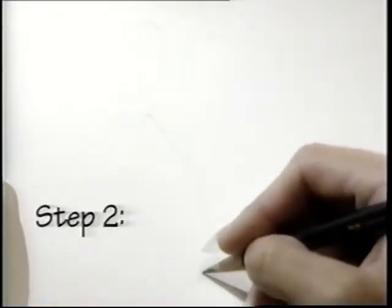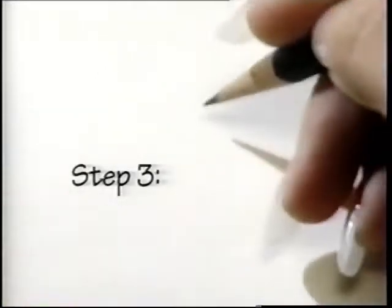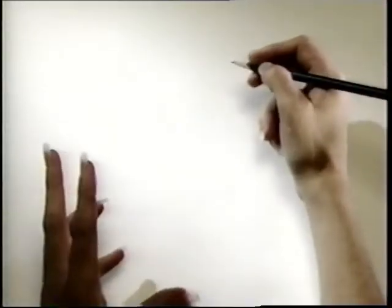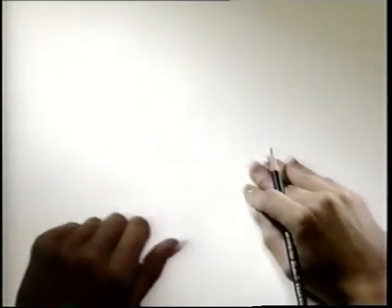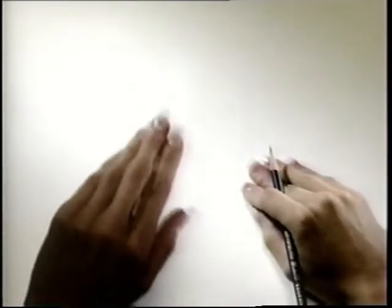Now, step number two can be drawn right on top of step number one. Lightly. Good. And as I said, you can be more and more firm as you go along. And there he is, Popeye the Sailor Man. Can you see him? He's waving at you. Great job. And keep drawing.